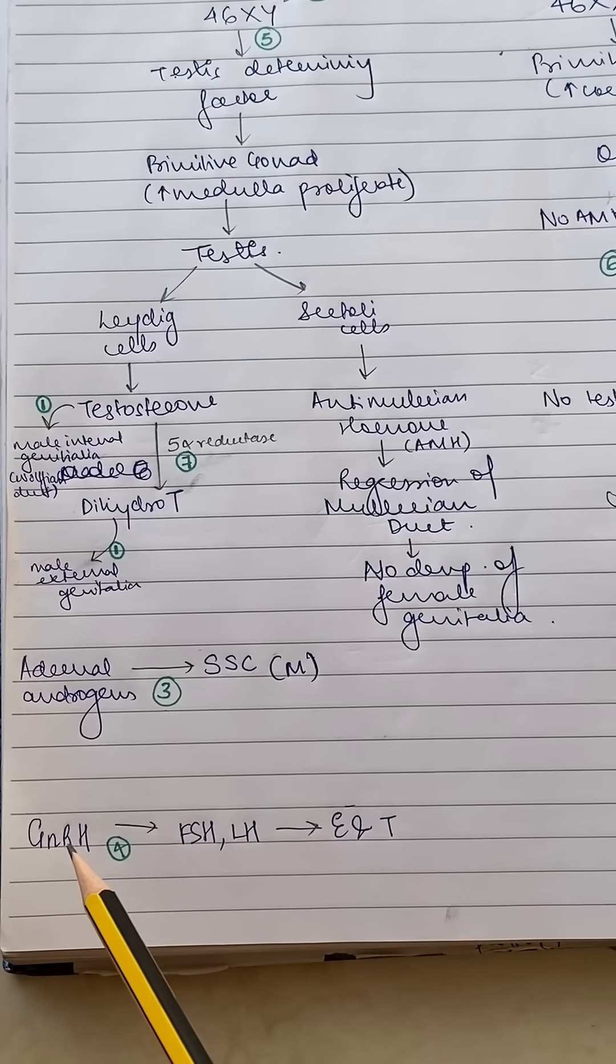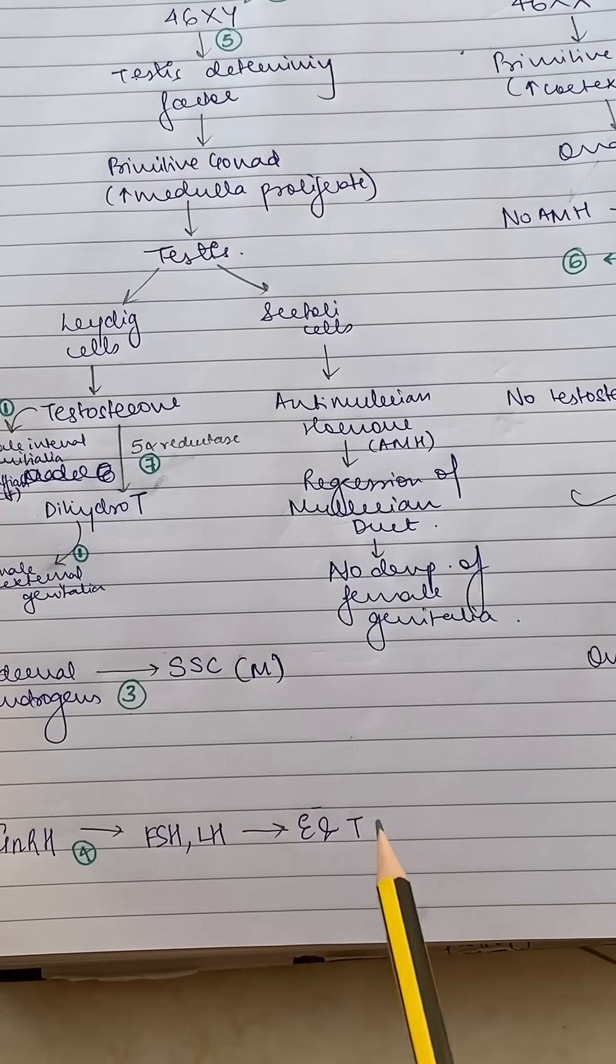Another thing to add to this is that GnRH helps the production of FSH and LH and these help in production of estrogen and testosterone.